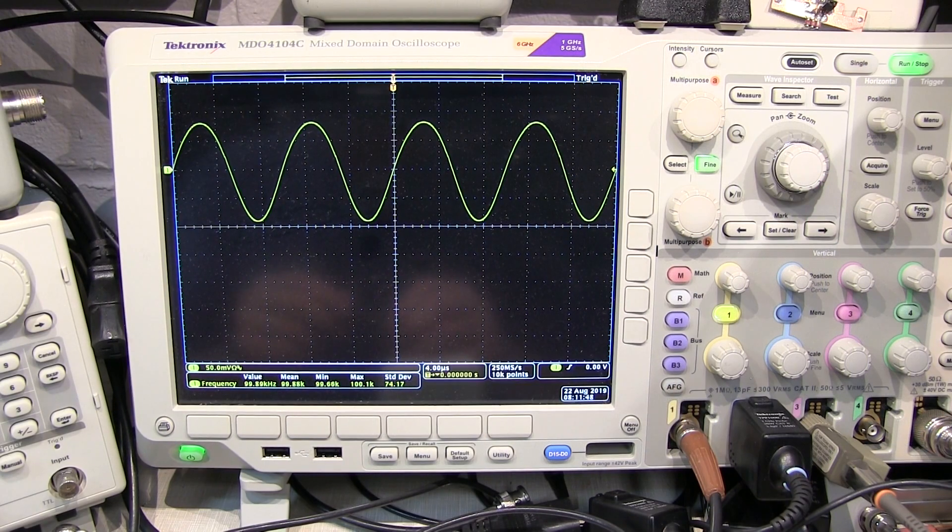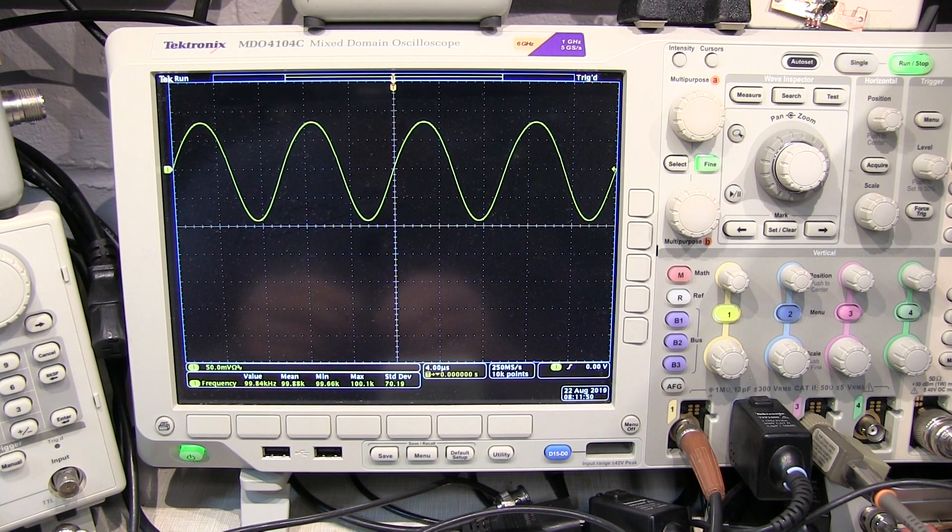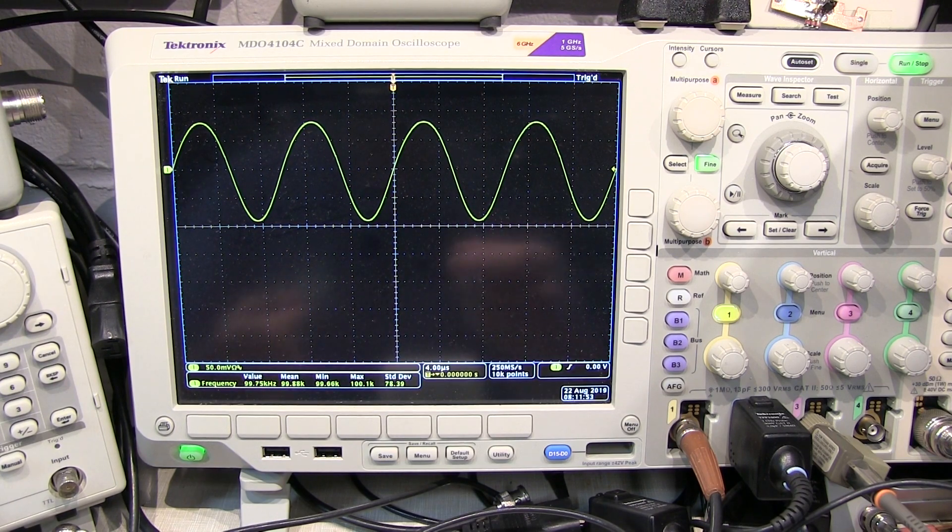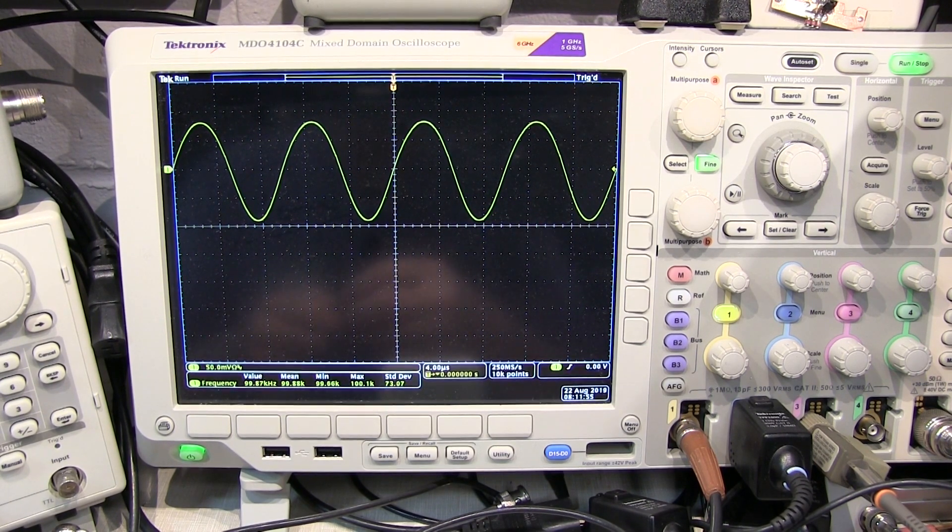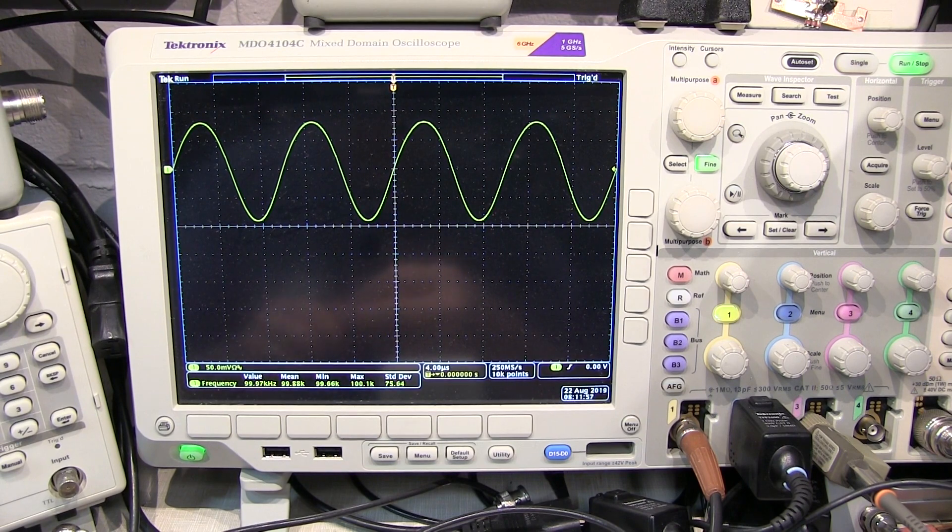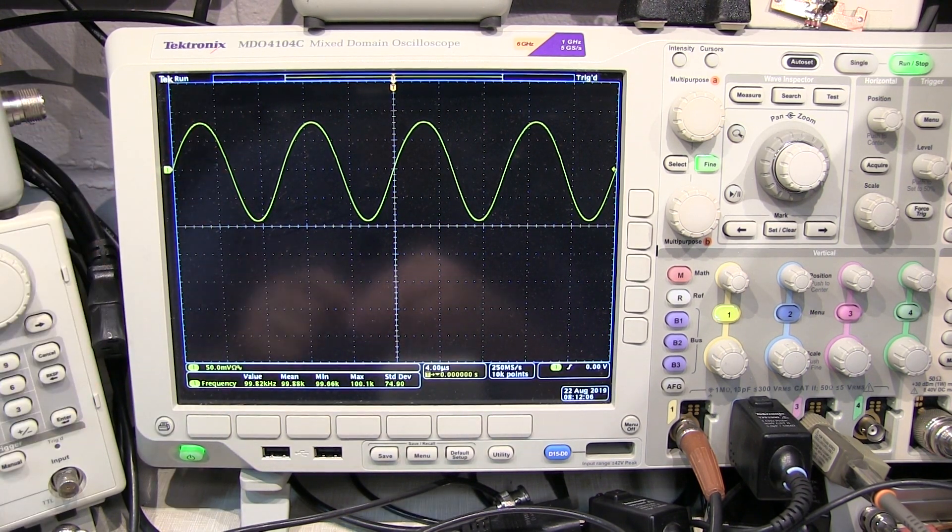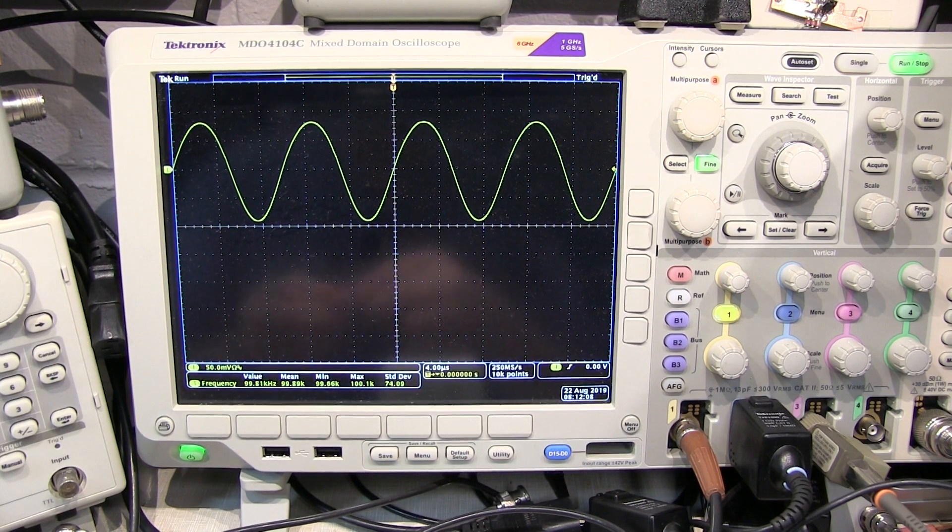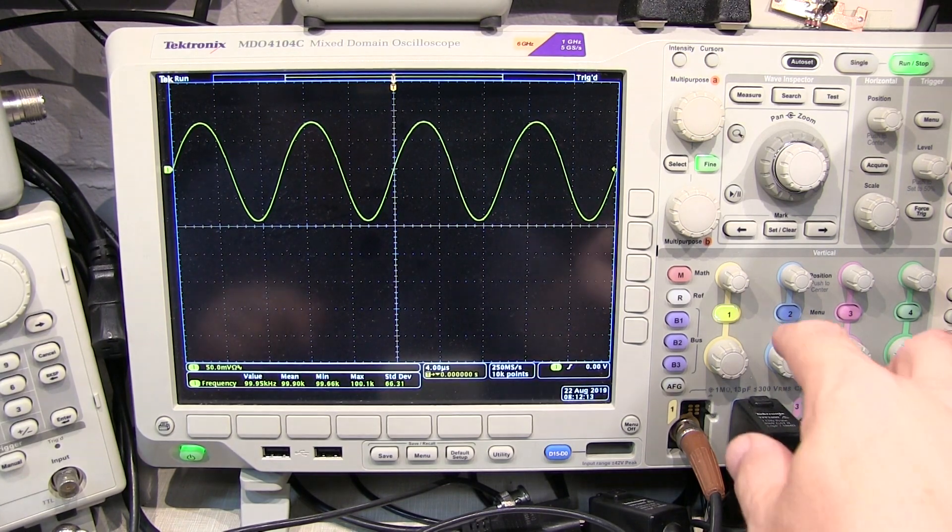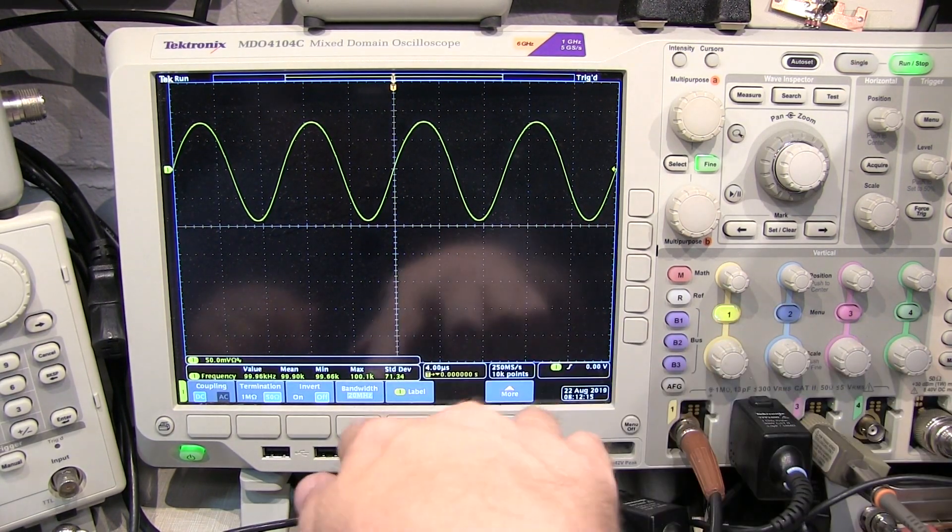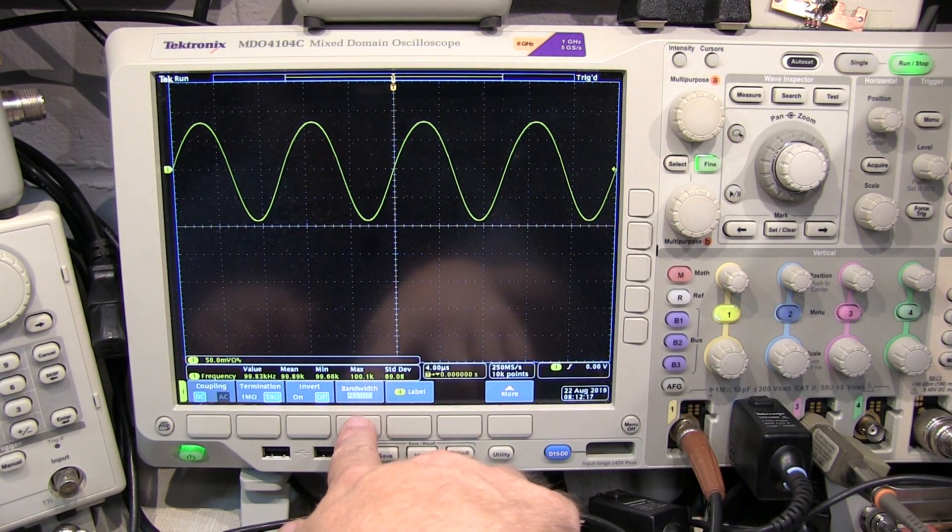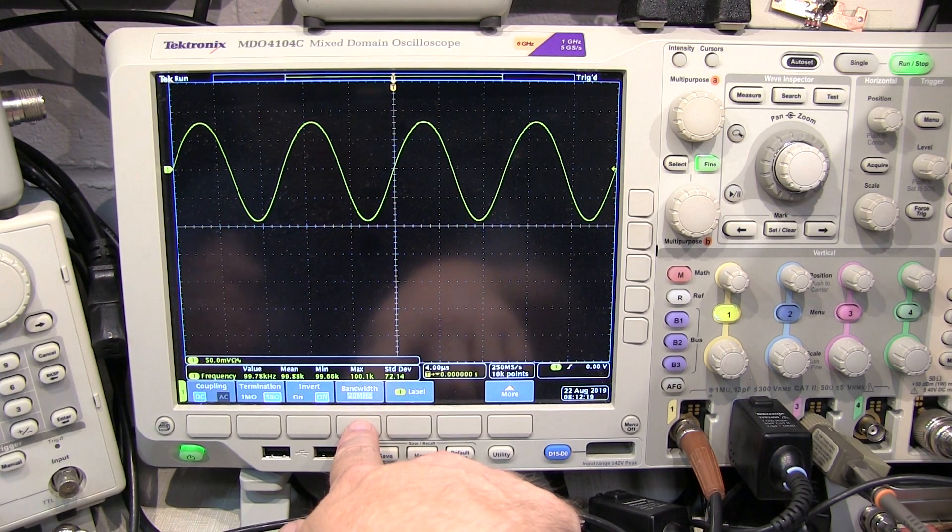So here's the output of the mixer. Well I'm cheating a little bit. Remember a mixer is going to produce both the sum and difference frequencies of the RF input and the LO. So my RF input is at 100 meg, my LO is at 100.1 megahertz. So I'm going to create an output at 100 kilohertz like I see here, but there's also an output signal at 200.1 megahertz. Why don't I see that? Well I'm cheating a little bit.